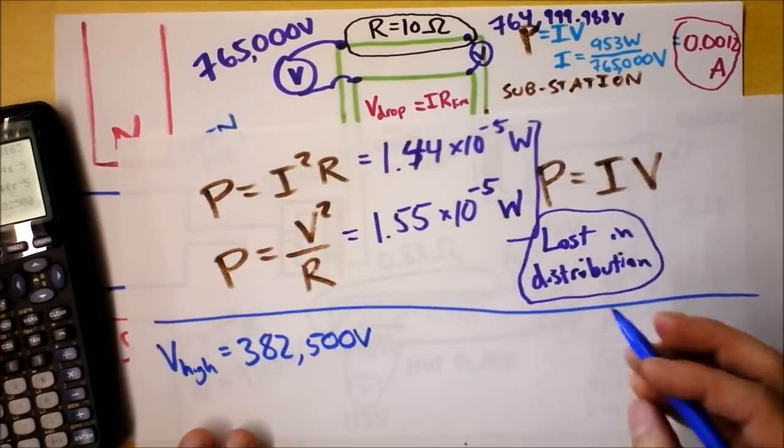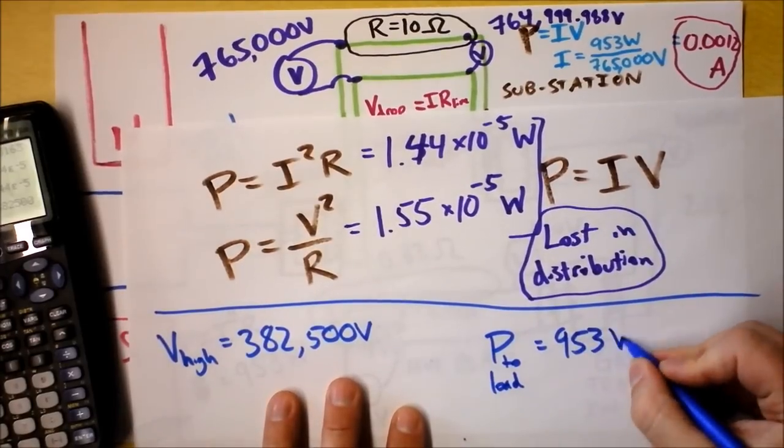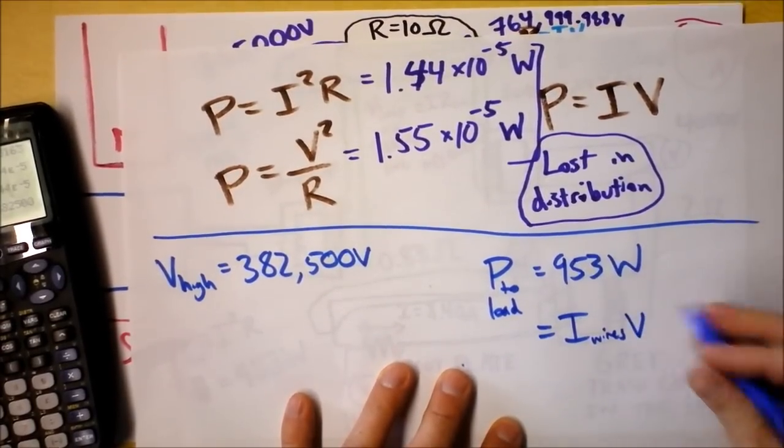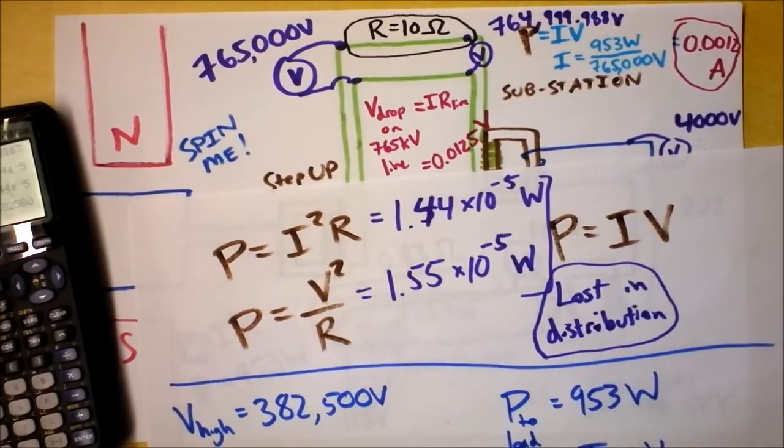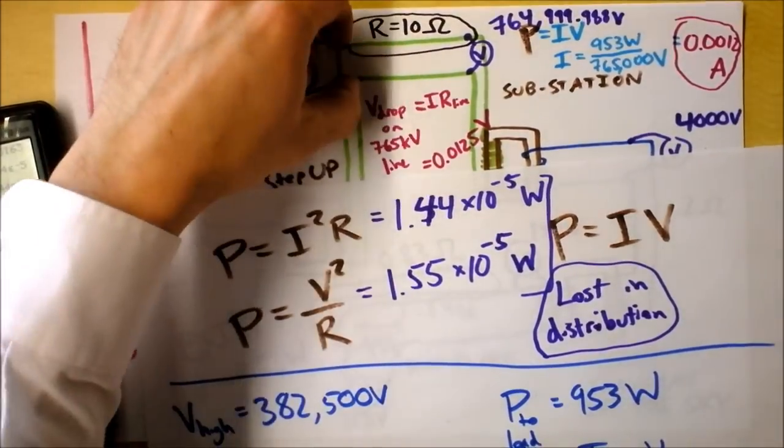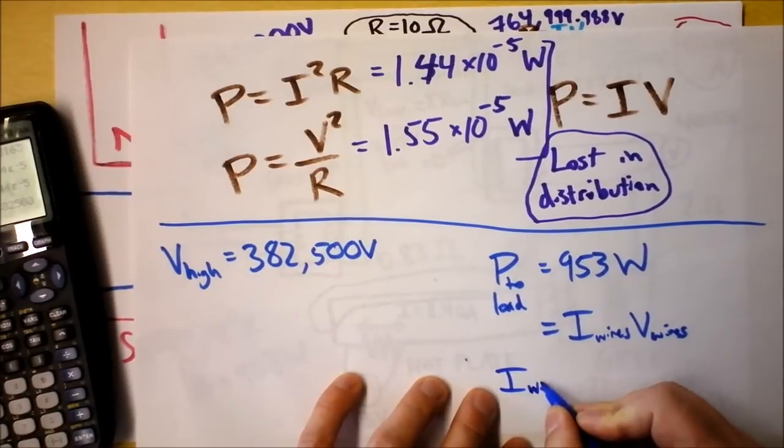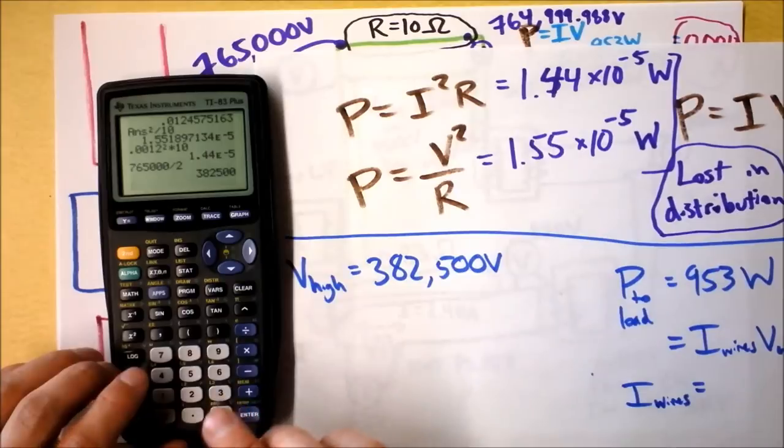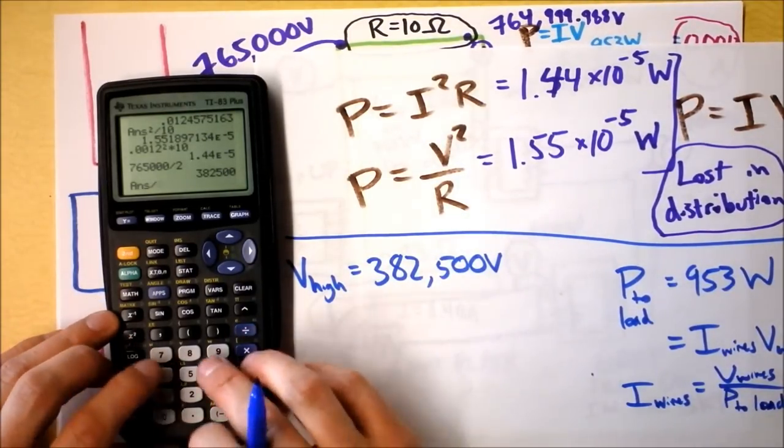Let's do that calculation right now. Again, I'm going to say that power to the load is 953 watts. So that means that that's the current in the wires times the voltage of the wires. The voltage drop across the wires, not the voltage drop due to the wires. Maybe I should say the voltage drop between the wires. What I'm planning to do is find what the current would be. The current in the wires would then be, the current's going to be twice as big.